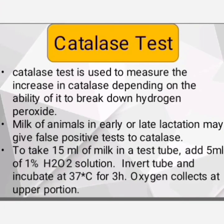Now let's discuss the catalase test. Living cells, including leukocytes, contain the enzyme catalase. The number of leukocytes in milk increases during infection of the udder. The catalase test measures the increase in catalase based on its ability to break down hydrogen peroxide. Milk from animals in early or late lactation may give a false positive result. For the procedure: take 15 ml of milk in a test tube, add 5 ml of 1% hydrogen peroxide solution, invert the tube, and incubate at 37°C for 3 hours. Oxygen collects at the upper portion.